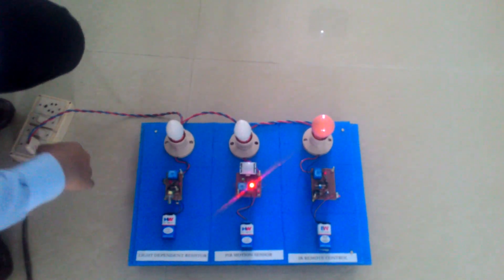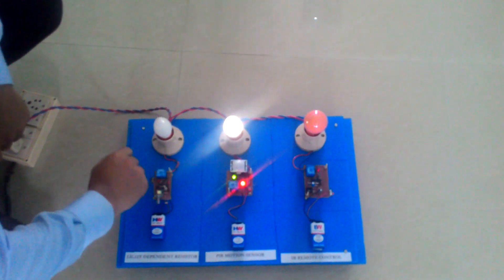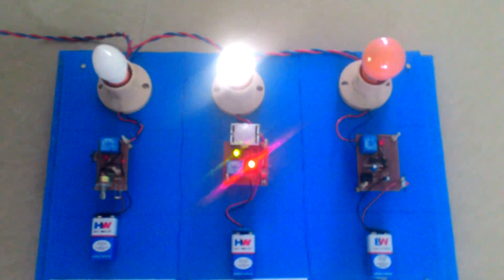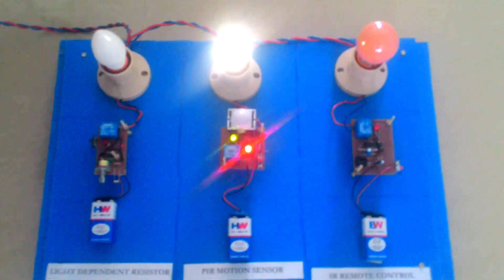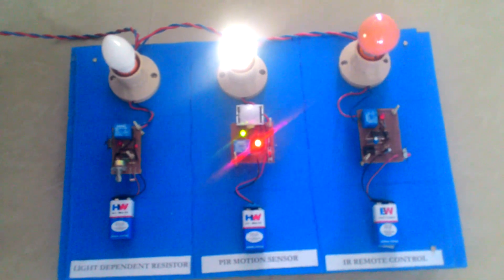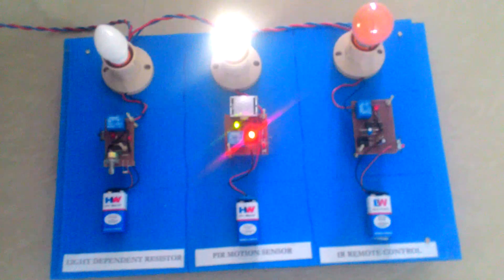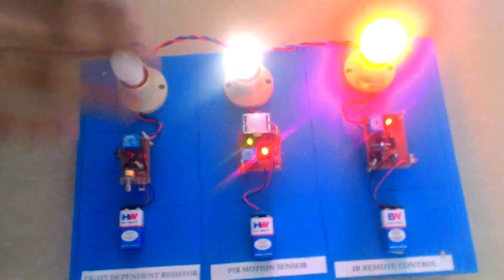And the second one is the motion sensor. We are using the PIR motion sensor. In this case, the activation of the light will depend on the motion sensor. Right now it is sensing motion and that's why it's on. If we keep on sensing motion, it will keep the light on.